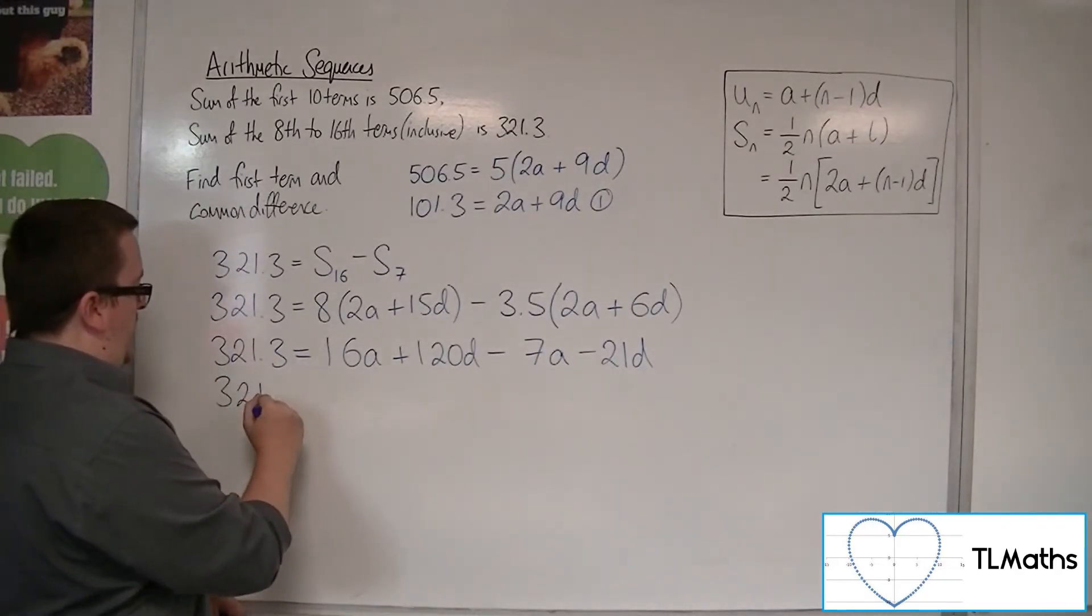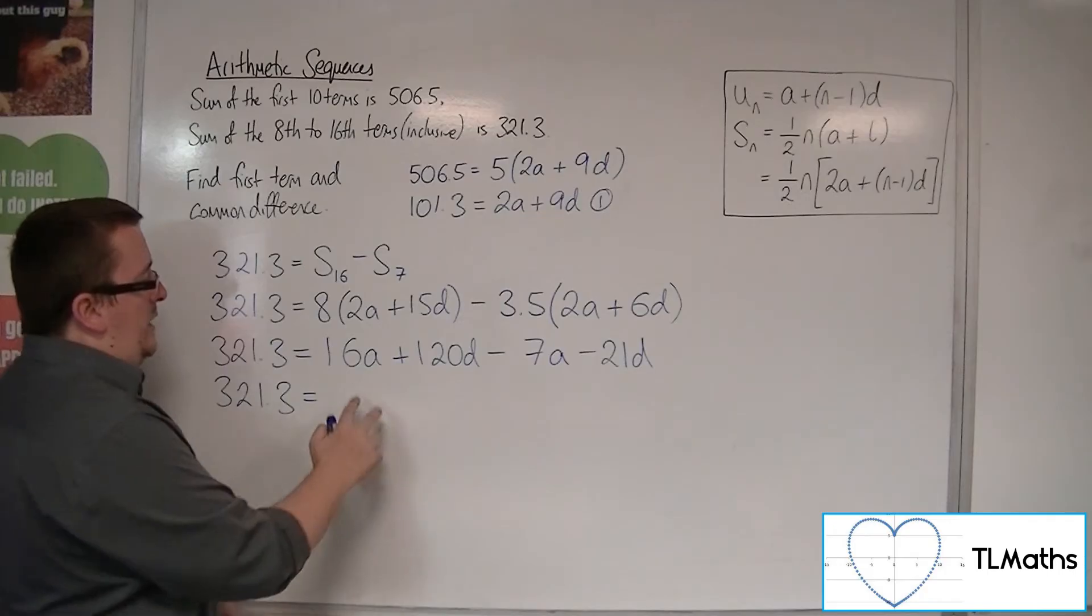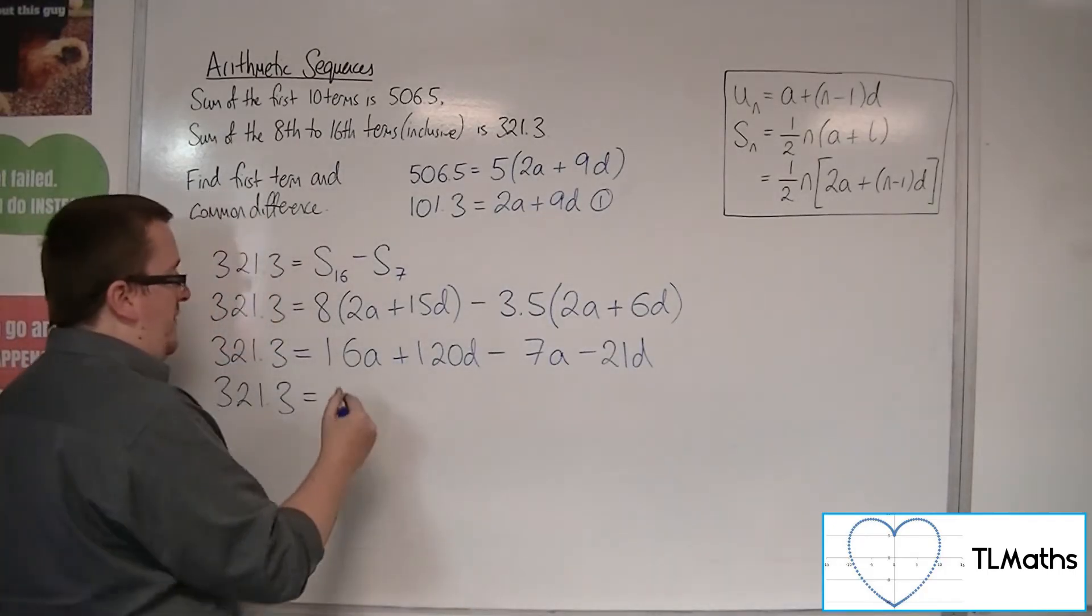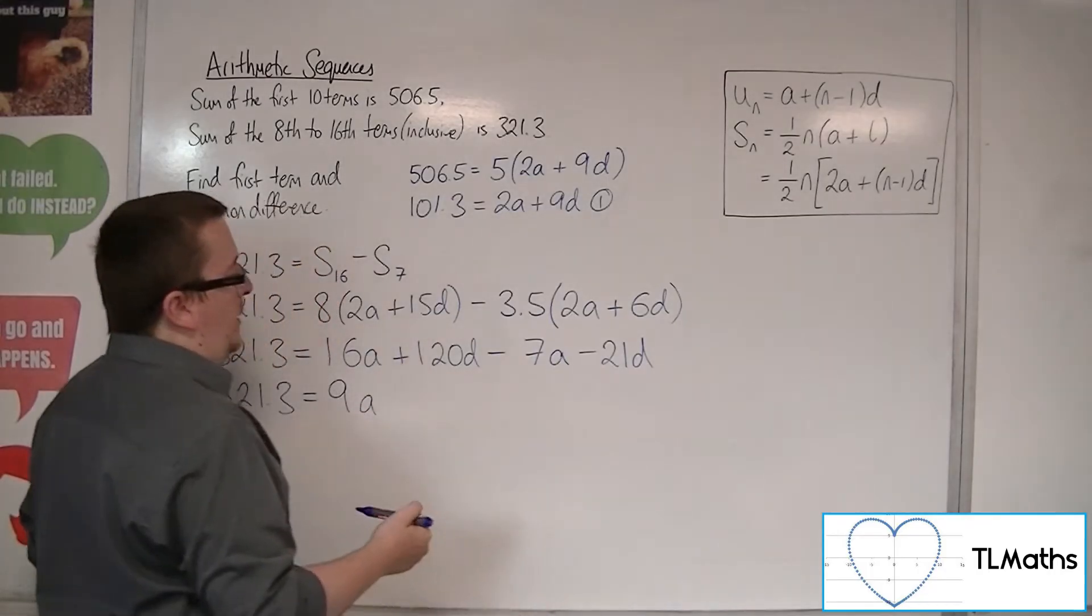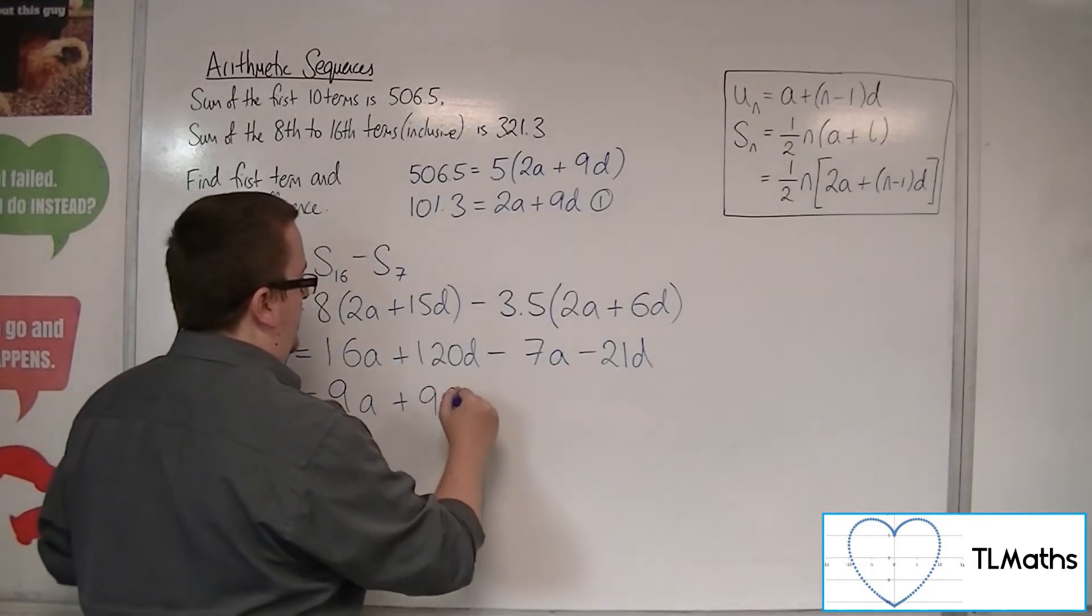So I've actually got 321.3 equals 16a take away 7a, so 9a, and then we've got 120d take away 21, which leaves me 99d.